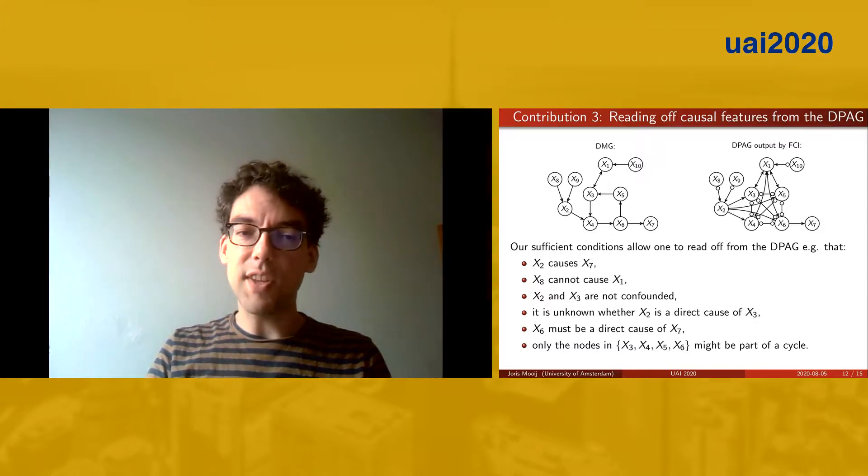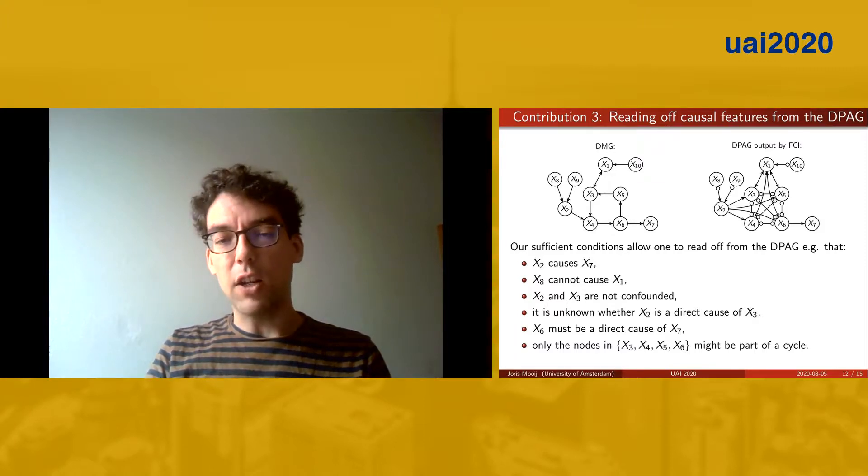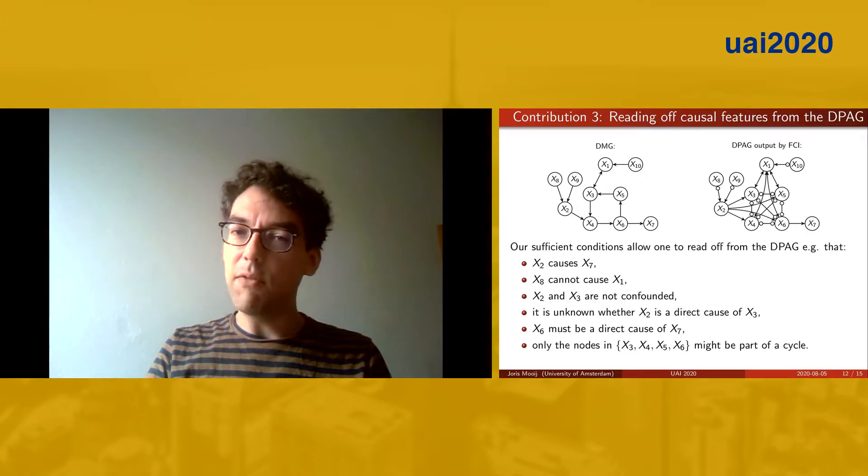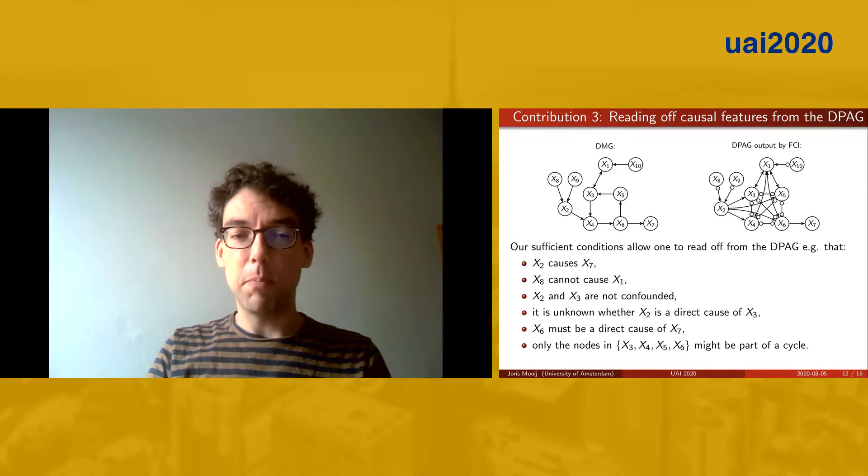This is that x2 causes x7, x8 cannot cause x1, x2 and x3 are not confounded, and it is unknown whether x2 is a direct cause of x3, even though there is a directed edge from x2 to x3, yet x6 must be a direct cause of x7. And only the nodes x3, x4, x5, x6 might be part of a cycle.